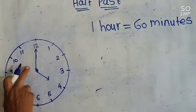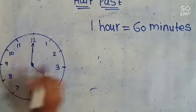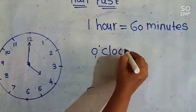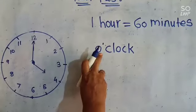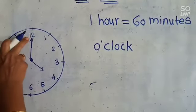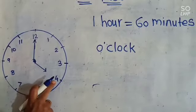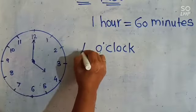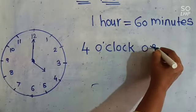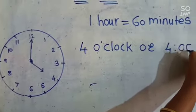When the minute hand is on 12, we call it 8 o'clock. Last session I explained it — this is the revision. When the minute hand is on 12 and the hour hand is on 4, then the time is 4 o'clock, written as 4:00.